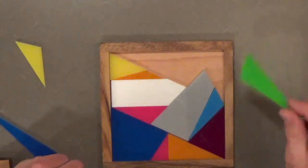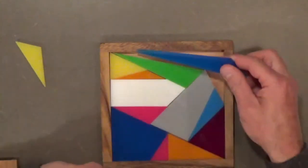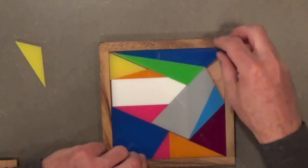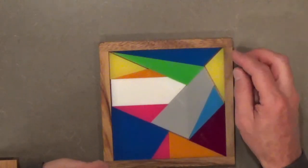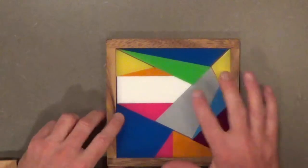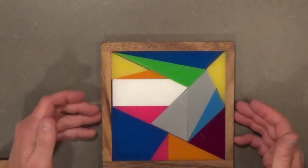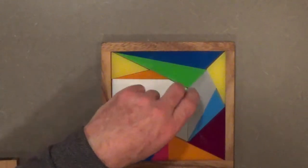There we go. And, this piece going here. That piece going there. And, that fourteenth piece going there. So, there you have it. That is one of five hundred and thirty-six different ways to build that square.